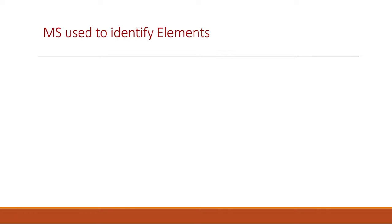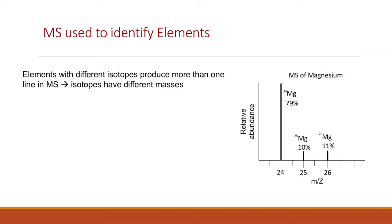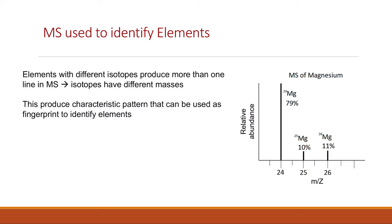A mass spectrometer can also be used to identify elements. Elements with different isotopes produce more than one line in the mass spectrum, as seen with magnesium and boron. Because isotopes have different masses, the mass spectrum of magnesium produces a characteristic pattern — three peaks at m/z values of 24, 25, and 26, with relative abundances of 79, 10, and 11 — which acts as a fingerprint to identify the element. You can compare this pattern with known spectra to identify your sample.